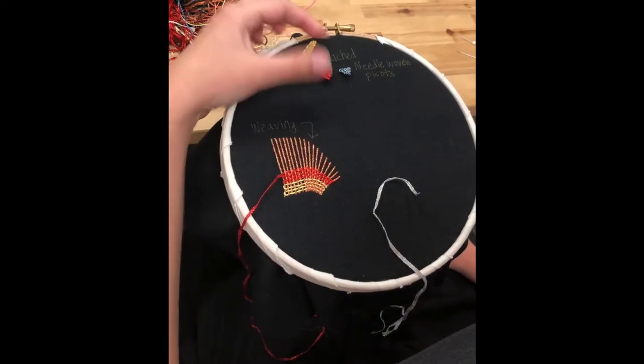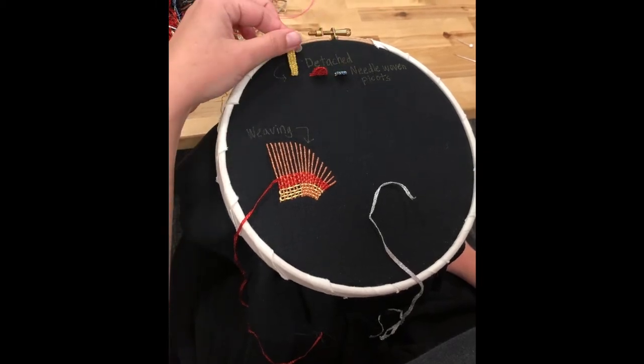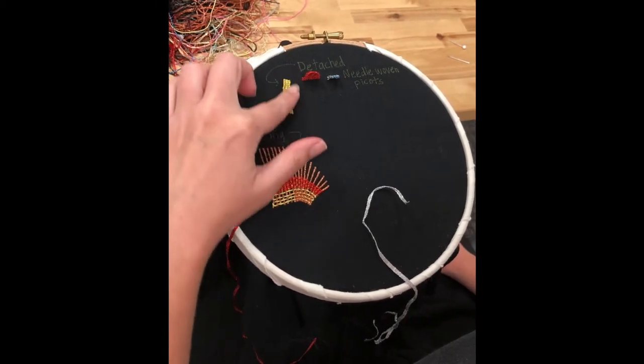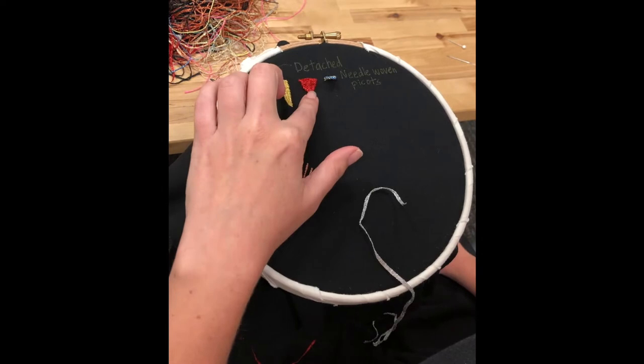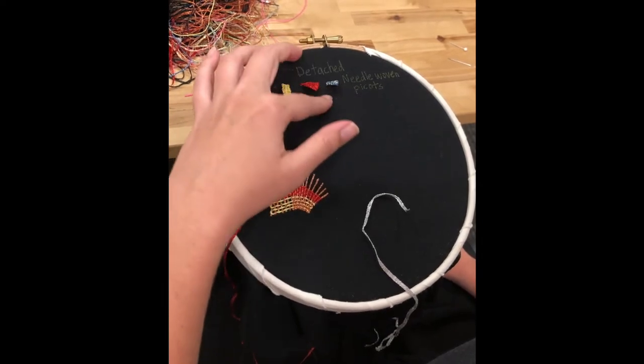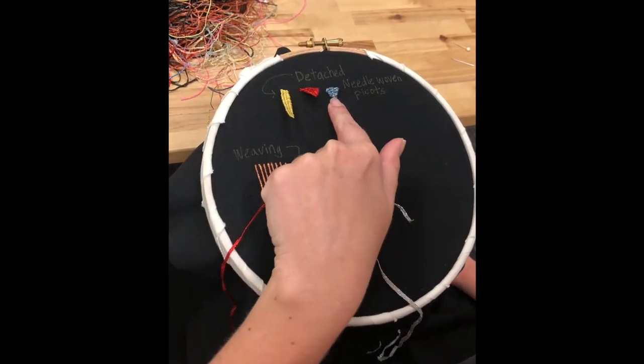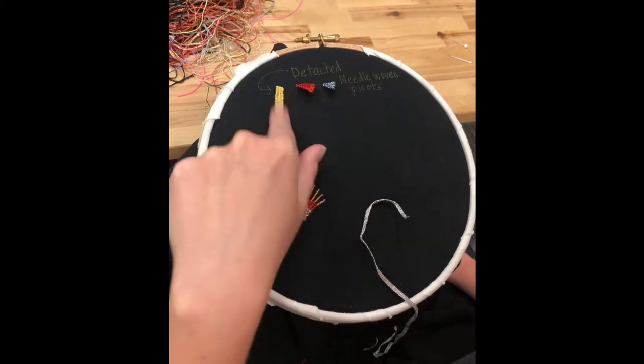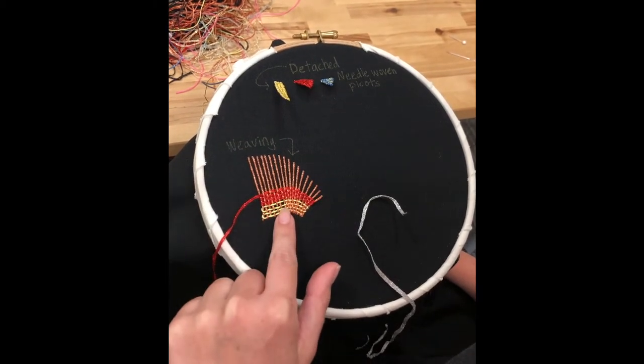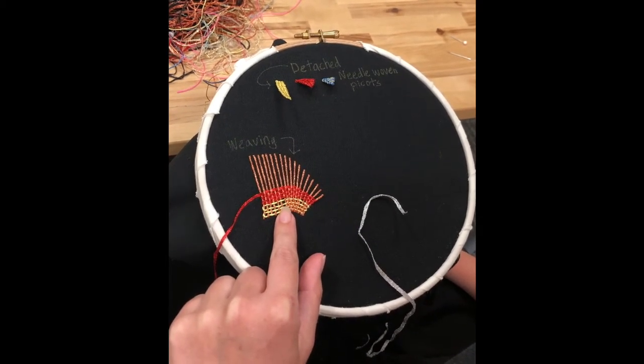They're kind of a fun little thing that you can make in the different Kreinik threads. So this one's a really long thin one, this one's kind of a short fat one, and this one I did with two separate colored threads, which is kind of exciting. And then we're going to talk just a little bit about weaving in general.